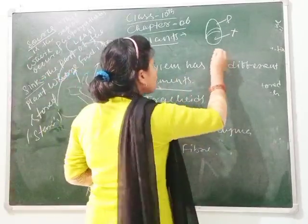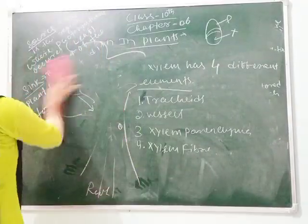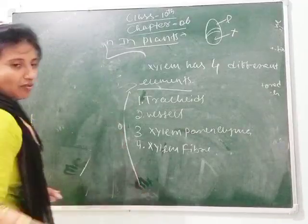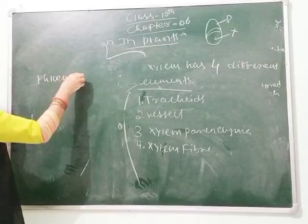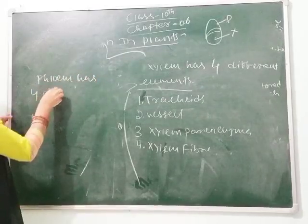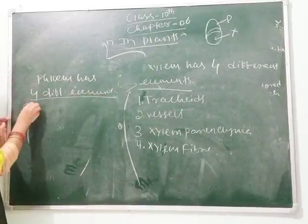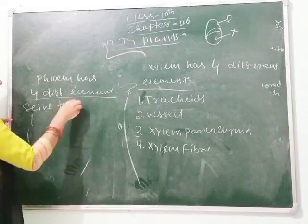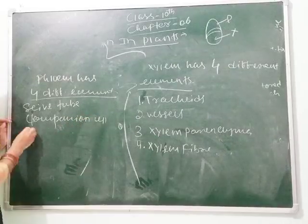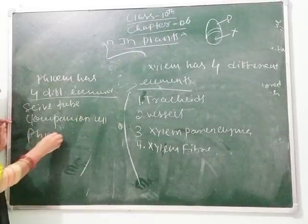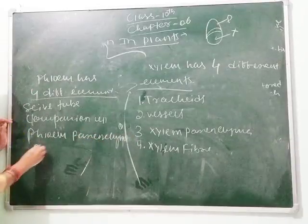Phloem also has four different elements: sieve tube, companion cell, phloem parenchyma, and phloem fiber.